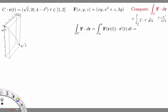So for instance, at the point corresponding to t equals 1, I have the tangent vector r', and then I have a vector at the point given by F.